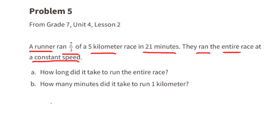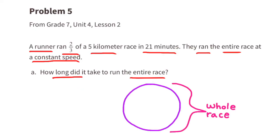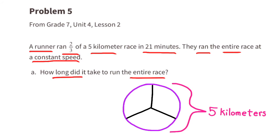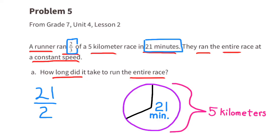Problem number five from 7th grade unit 4 lesson 2: a runner ran two-thirds of a five kilometer race in 21 minutes at a constant speed. Part a: how long did it take to run the entire race? Imagine a circle representing the entire race of five kilometers. Divided into thirds, two-thirds of the race was completed in 21 minutes. So one-third would be half of 21 — that is, 10.5 minutes.